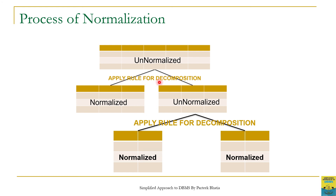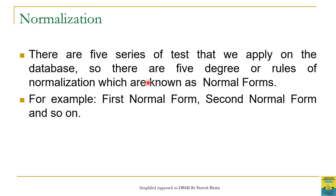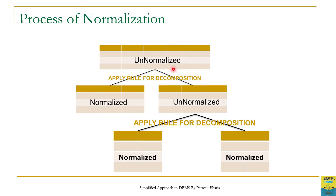Normalization is a process of decomposition where an un-normalized table is decomposed into smaller tables by applying some rule of decomposition. In the process of normalization we have multiple tests — normally we perform five series of tests on a table, and these are called the five normal forms. We have the first normal form, second normal form, third normal form, and the fourth and fifth normal forms. In this section we will learn all those rules and how to apply the rule of decomposition if a particular test fails.